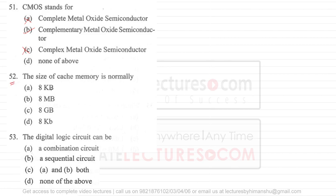Question number 52 asks about the size of cache memory. Generally, cache memory size is given in megabytes and register size is given in bytes. Cache memory is generally 2 MB, sometimes 3 MB, sometimes 6 MB, and for high-end computers it is 8 MB. Cache memory can also be L1, L2, and L3 cache. So generally, the size of cache memory is in megabytes.